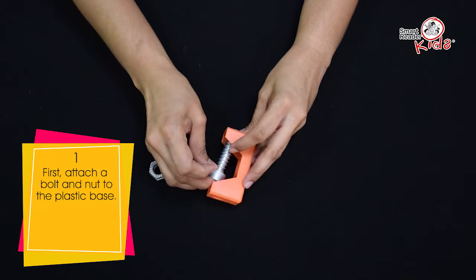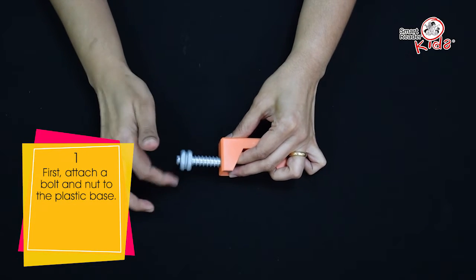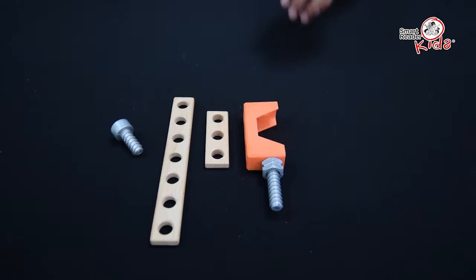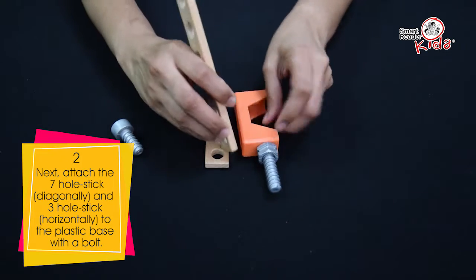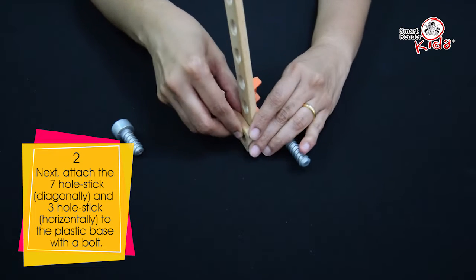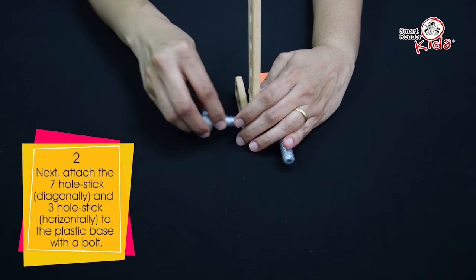First, attach a bolt and nut to the plastic base. Next, attach the 7-hole stick diagonally and the 3-hole stick horizontally to the plastic base with a bolt.